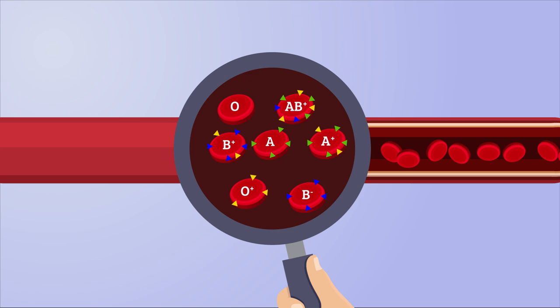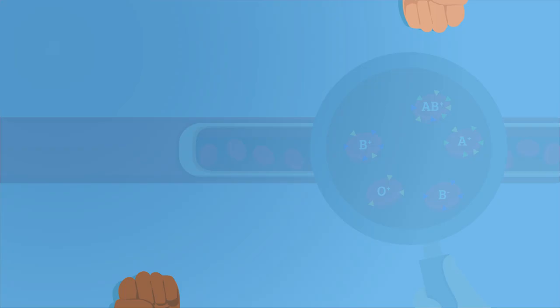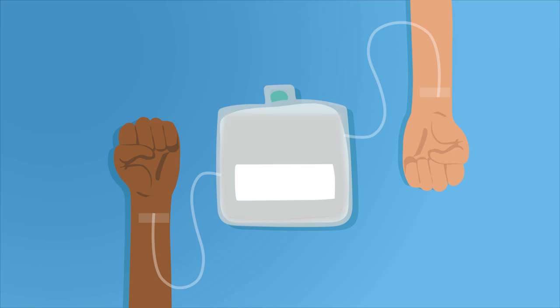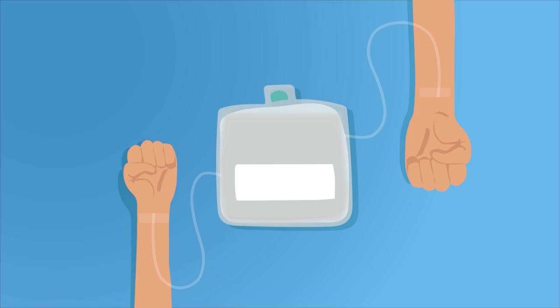Blood is further categorized into positive and negative based on the presence of D antigen. Before blood transfusions can be performed, determining the blood type is essential as transfusion of non-matching blood type can result in blood agglutination.